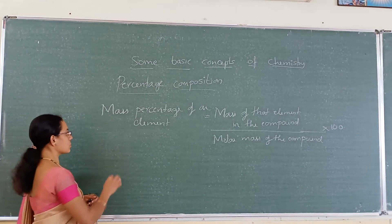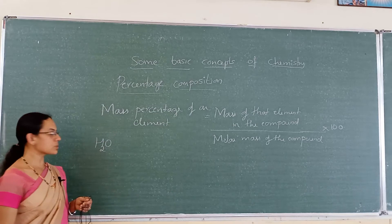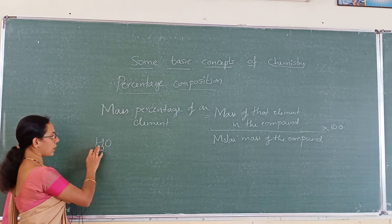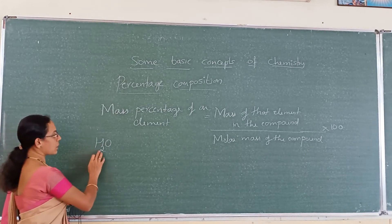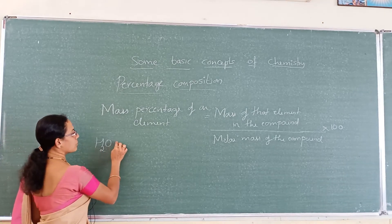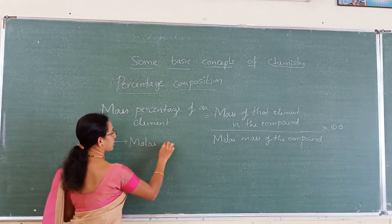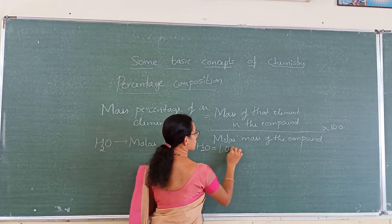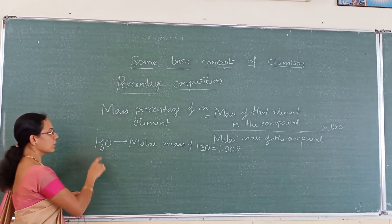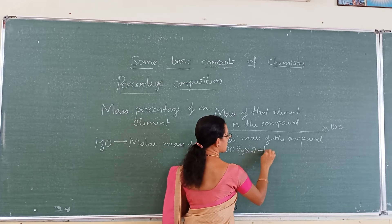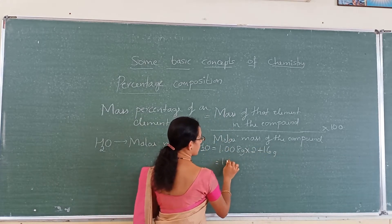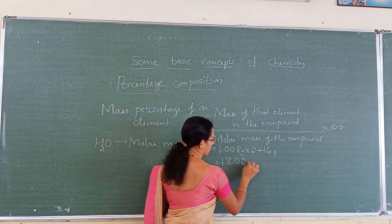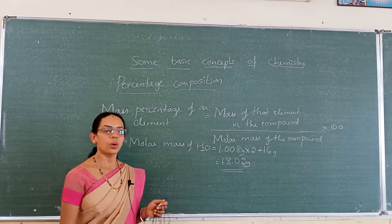Let us take one problem — water, H₂O. The elements present in water are hydrogen and oxygen. The question is: what is the mass percentage of hydrogen in water, and what is the mass percentage of oxygen in water? First we have to calculate the molar mass of water. Molar mass of water is 1.008 grams (atomic mass of hydrogen) into 2, plus 16 grams, which totals 18.02 grams.